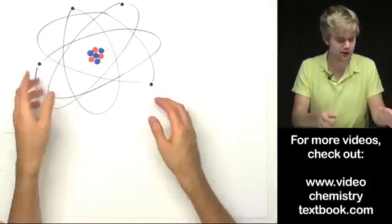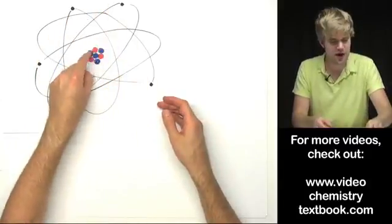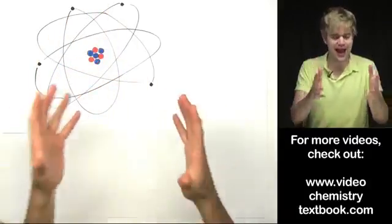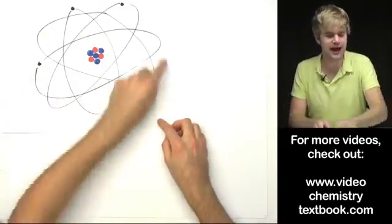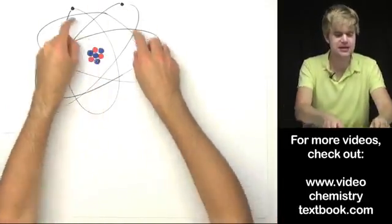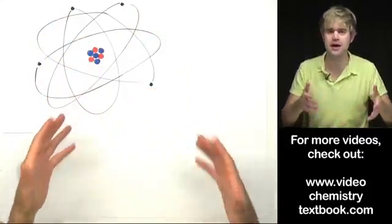The atom itself is made up of even smaller things. So we said atoms are like the building block for all stuff, but then if you look at an atom, it has even smaller building blocks that make it up.